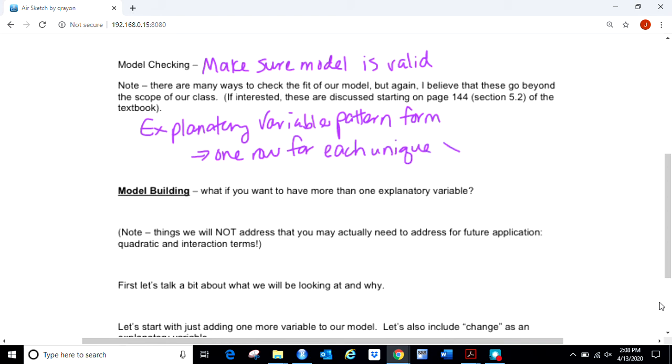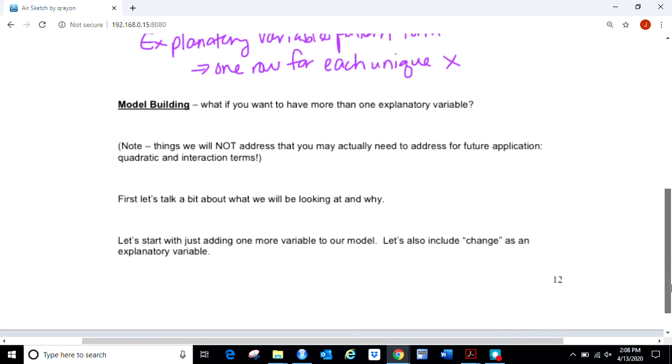Thinking about what we've done with this data set before, we've sort of done this when calculating sample proportions for our bubble plot. We took all the kicks done at the same distance, like 18 yards, found how many were attempted and how many were made. That would be the idea of explanatory variable pattern form. But again, mainly just to make sure you know there are ways of checking it, they just go beyond the scope of our class.